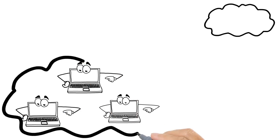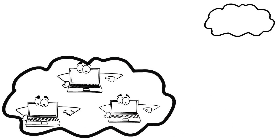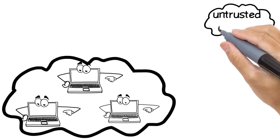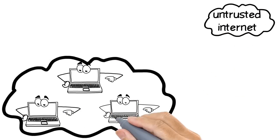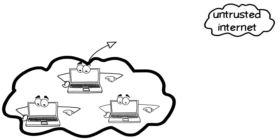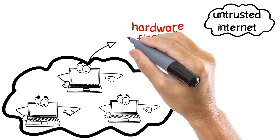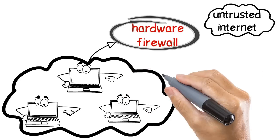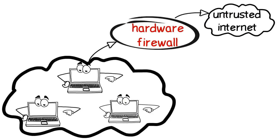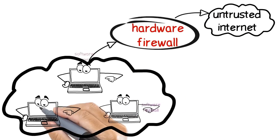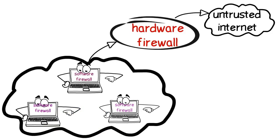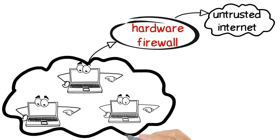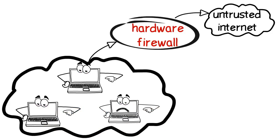If more than one computer is connected to a network, then it is necessary to protect your network from the untrusted internet via a hardware firewall. But it is also necessary to protect each computer with a software firewall, so that if one computer gets infected with viruses, the other computers will remain free from the viruses.